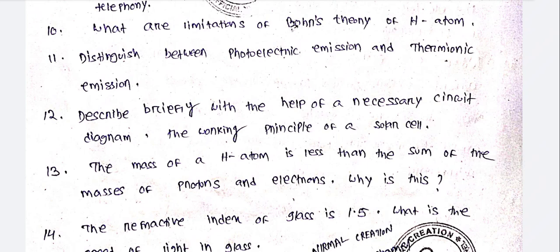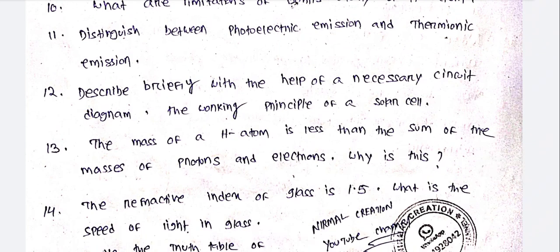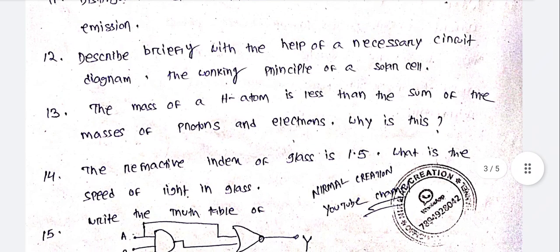What are the limitations of Bohr's theory of H atom? Distinguish between photoelectric emission and thermionic emission. Describe briefly with the help of a necessary circuit diagram the working principle of a solar cell.